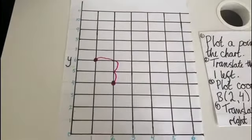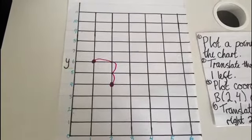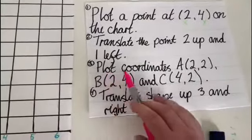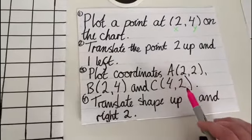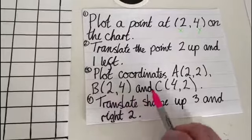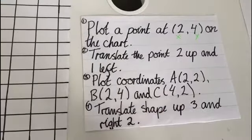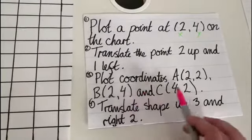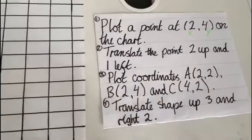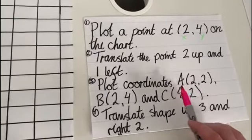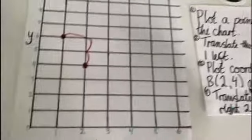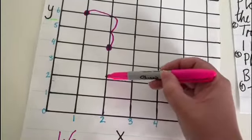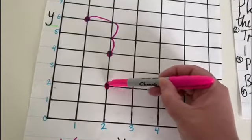The next step would be to plot a set of coordinates on the grid to create a shape and then we're going to translate that shape. So for my shape my coordinates are: A is 2 and 2, B is 2 and 4, and C is 4 and 2. Remember the first number is always my x-axis and the second number is always my y-axis. So for plot A I'm going to look at 2 on the x and 2 on the y. I find 2 on my x-axis and then I go up to 2 on my y-axis. That is my first point.